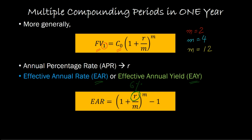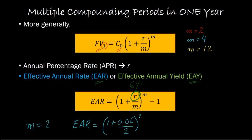The Effective Annual Yield is calculated using exactly this formula. You take the annual interest rate, which is the APR — R in our example was consistently 6% — and account for how frequently interest is getting compounded to determine the effective annual rate. For semi-annual compounding, you do (1 + 0.06/2)² − 1, which solves out to 0.0609, or 6.09%. The effective annual rate accounts for how frequently interest is getting compounded and tells you what you are effectively earning after accounting for the compounding periods.